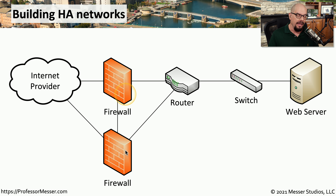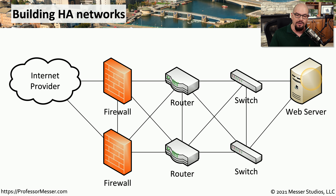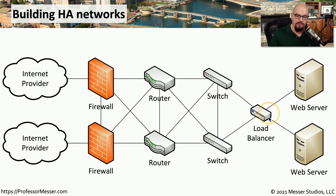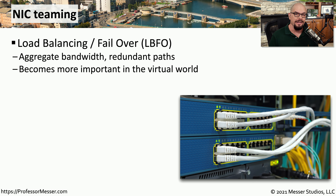Let's take that original network design and build it out to be highly available. We may want to add an additional firewall and have both firewalls on the network simultaneously, so that if you lose one firewall, the other one can take up the slack. You might also want to have multiple routers for exactly the same reason — if a router fails, we need a secondary router to provide connectivity. The same thing would apply to our switches, and on the back end we may even want to consider using multiple web servers with a load balancer in the middle. We might also want to consider adding an additional internet provider, so that if one internet provider is not available, we have a secondary system to rely on. As you can see, this can very quickly increase the complexity of the network design and the costs associated with these implementations.